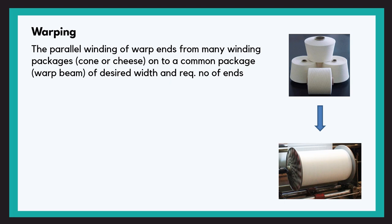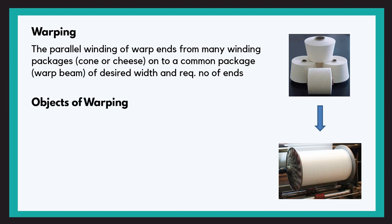The warp ends from many winding packages are wound parallelly to create the final package that is known as the warper's beam. Now let us discuss the main objectives of warping. The main objective is to convert the single end packages into a sheet of yarn of specified length and width.